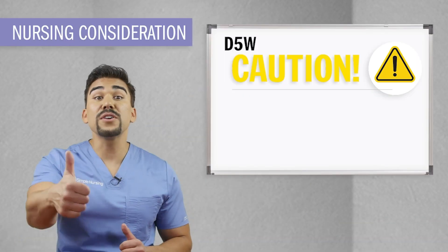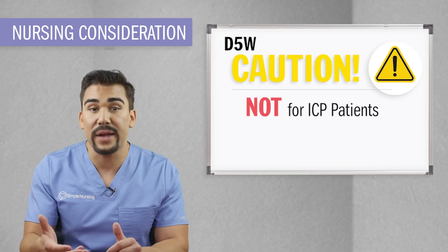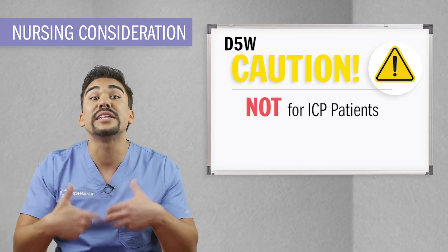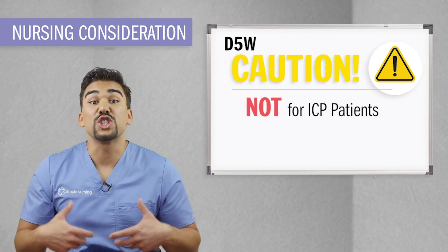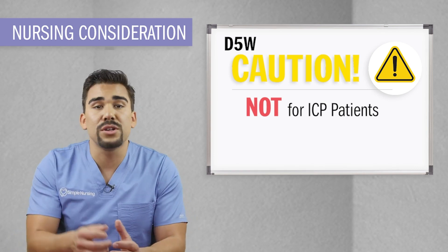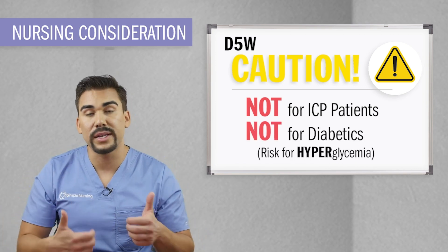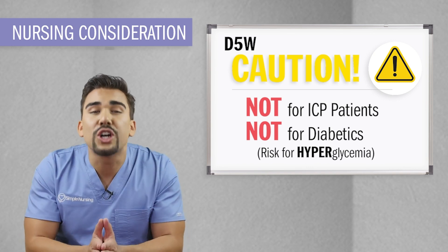Important nursing considerations with hypotonic fluids: Never use hypotonics with ICP patients — it will increase their intracranial pressure and cause brain swelling. Also, any solution with dextrose — which is just fancy words for sugar — is never used for diabetic patients with hyperglycemia problems, basically high blood sugar problems. Dextrose is sugar and will make more sugar in the body.